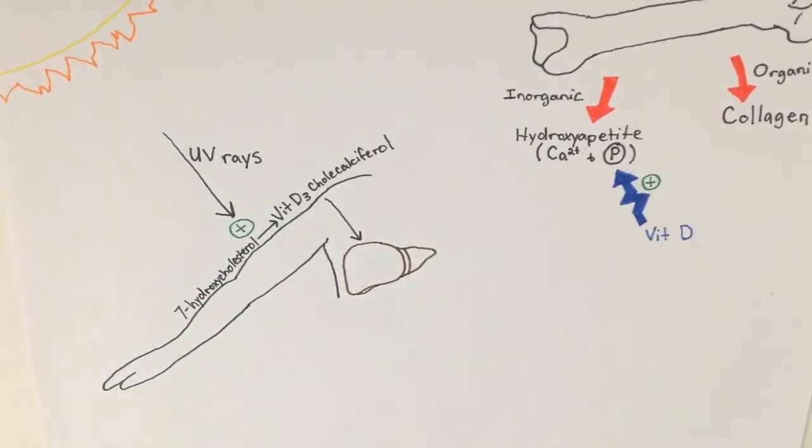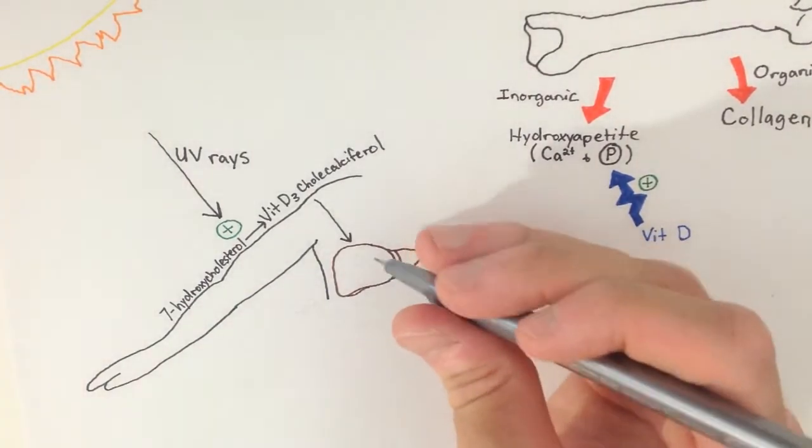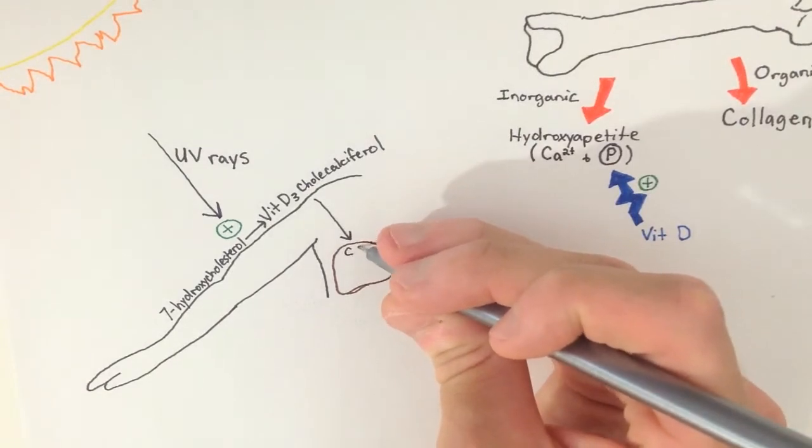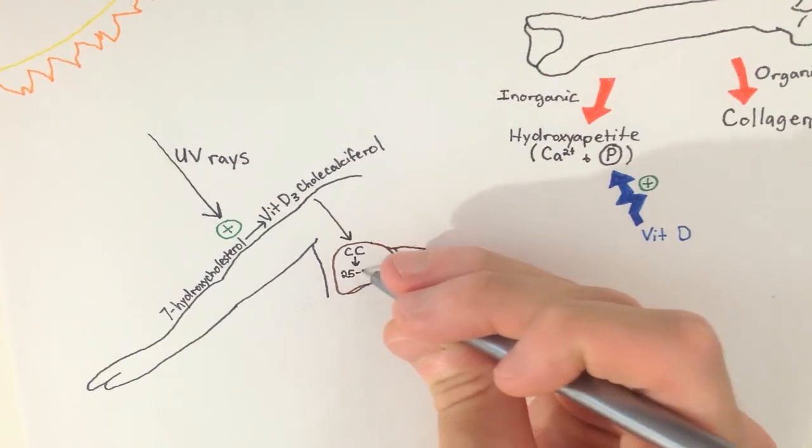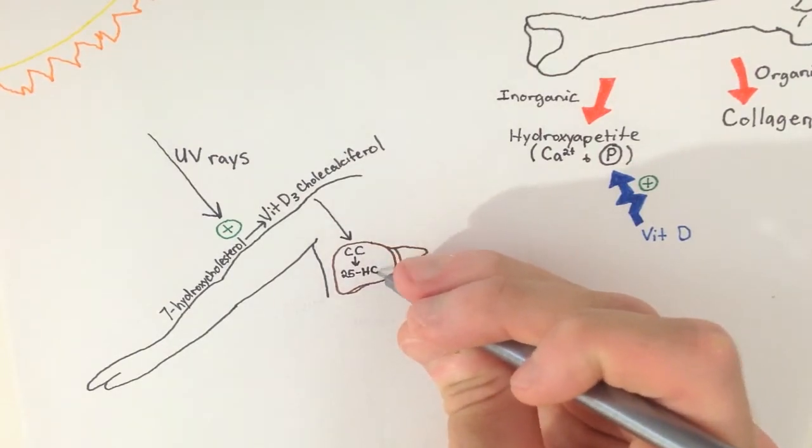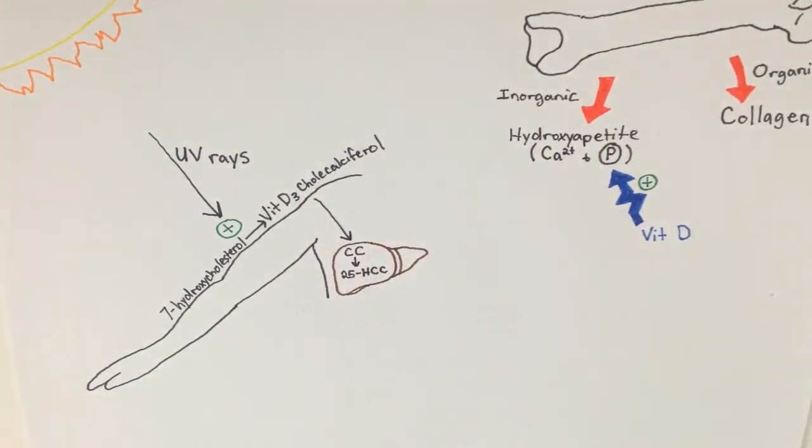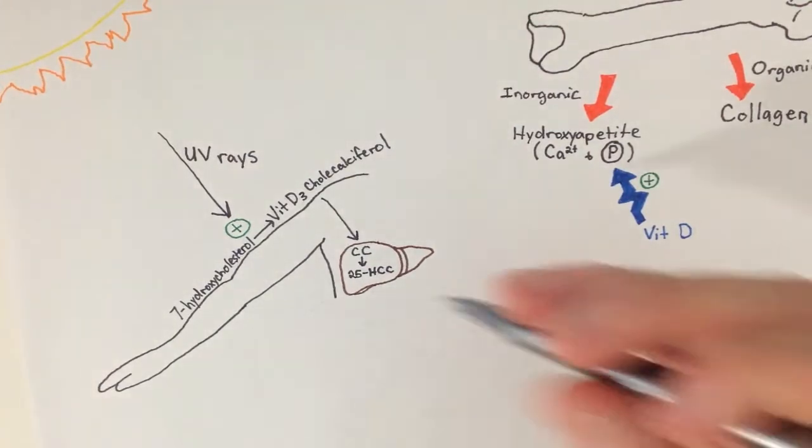This cholecalciferol gets transported to the liver where it is converted to 25-hydroxycholecalciferol, also known as calcidiol, the storage form of vitamin D in our body. This hormone is what is tested when checking your vitamin D levels in the body.